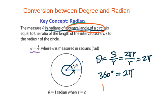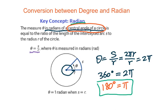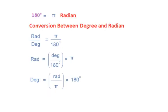Therefore, 360 degrees equals 2 pi, which means 180 degrees should be pi. This is a very important fact for conversion between degree and radian. So we already have 180 degrees equal to pi radian.